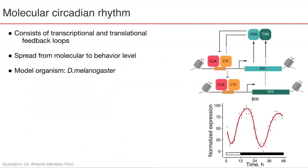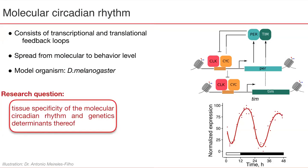Circadian rhythm is a biological process with a period of roughly 24 hours. It is present on all levels of the organism, from molecular rhythms inside the cells to behavioral patterns. On the molecular level, it consists of transcriptional and translational feedback loops, which we can in turn observe as sinusoidal patterns of expression through time. The main question of our research is the tissue specificity of molecular circadian rhythm and the genetic determinants thereof.